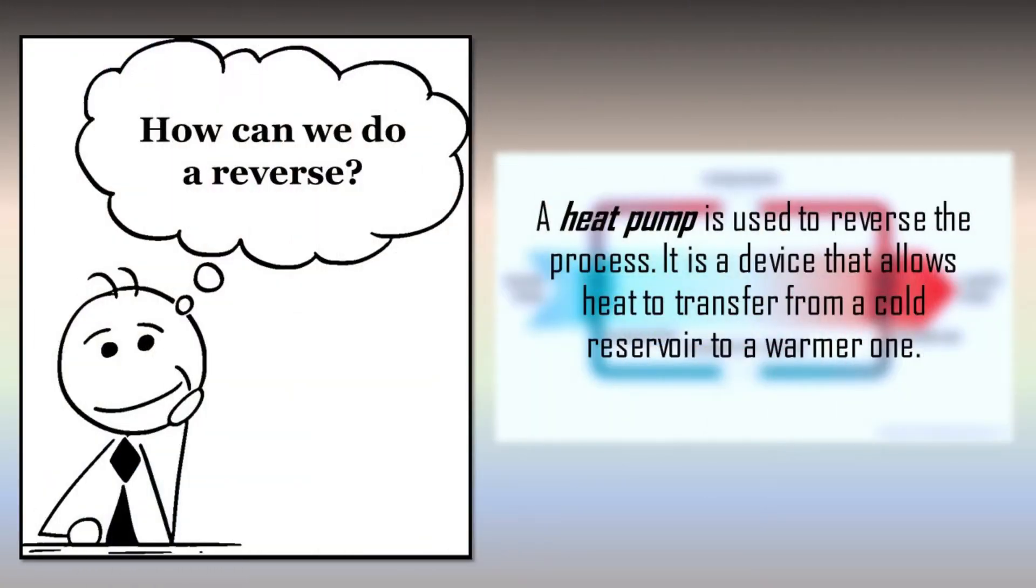And how can we do a reverse? We need a device that would provide work to be done in the system. A heat pump is used to reverse the process. The result when work is done on the system is, heat is extracted from a low temperature source and rejected to a high temperature source.